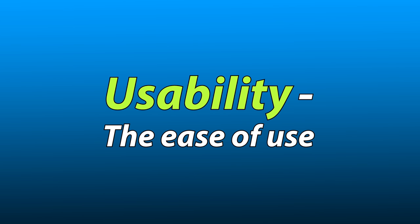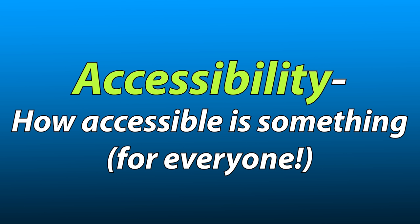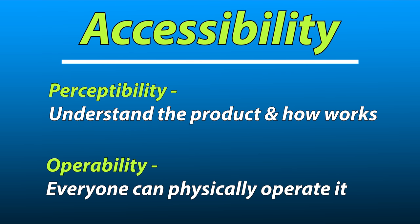My job as a camera reviewer is to tell you the strengths and weaknesses. The definition of usability is the ease of use — how easy is this product to use? There are some definitions that allow us to break this down further. One set of definitions is referred to as accessibility, and the first two parts of this are perceptibility — which means a person's ability to perceive what the product is — and operability.